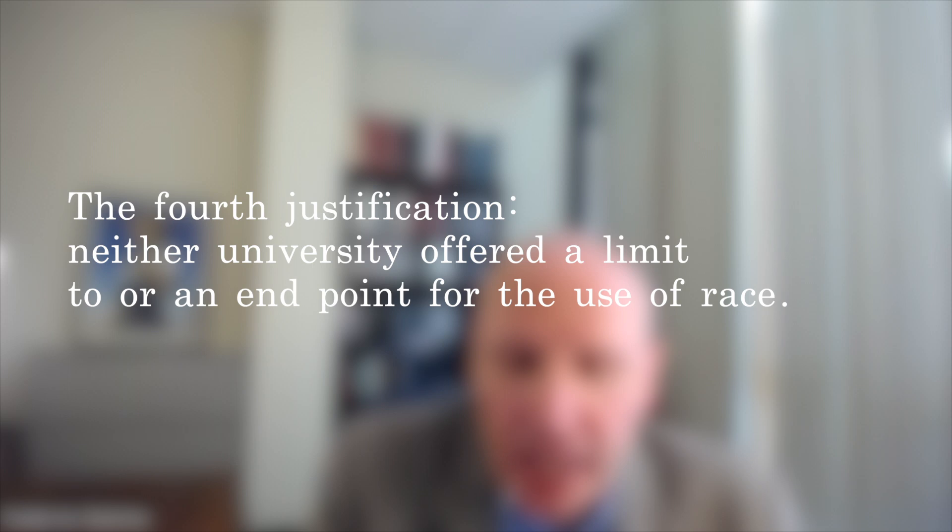The court observed — this is a fourth rationale — that neither university had offered a limit or an endpoint for its use of race. In Grutter, the majority and all of the concurring opinions had emphasized that the use of race in admissions was to be a temporary, transitional measure. Justice O'Connor even mentioned in her majority opinion that 25 years should be sufficient to phase out the use of race in admissions. Grutter was decided in 2003, so that meant 2028, not too long from today.